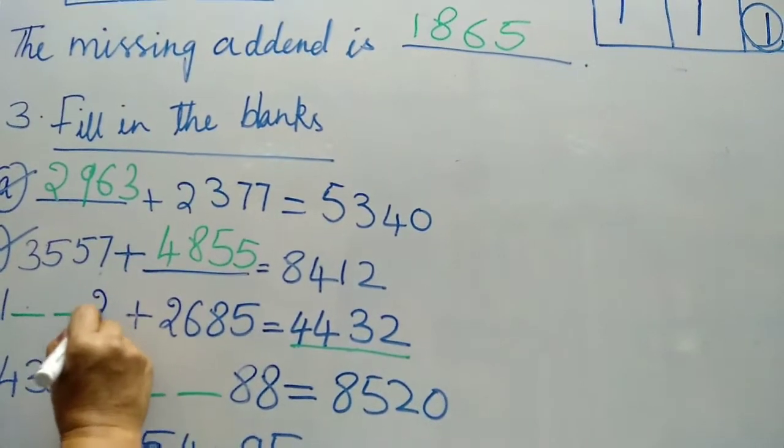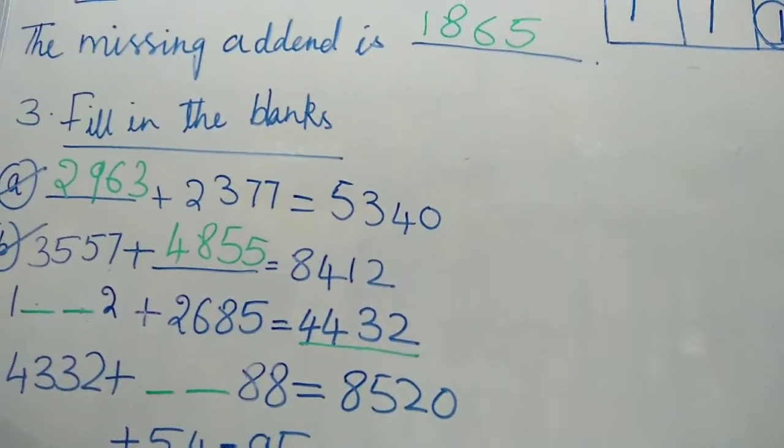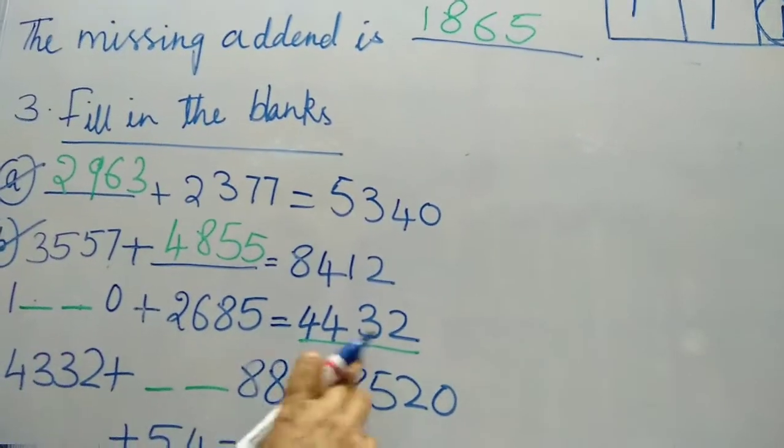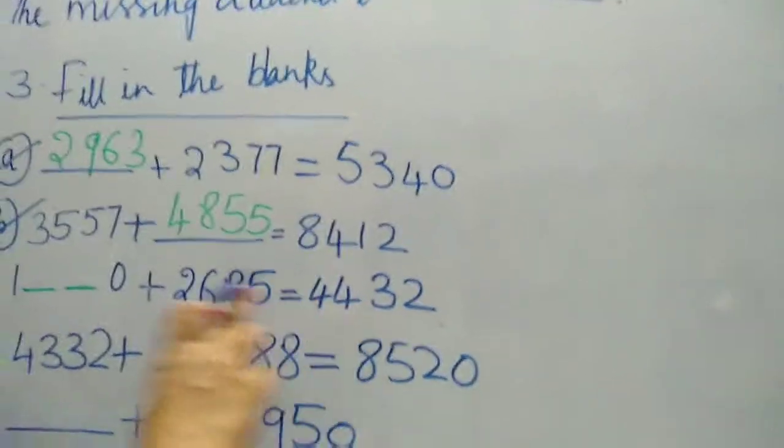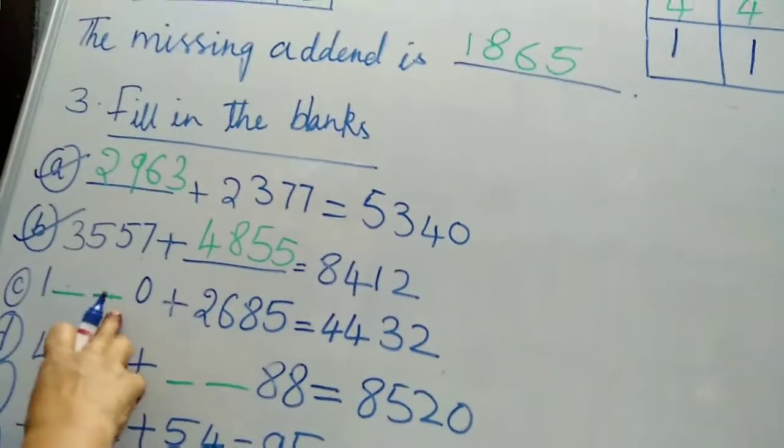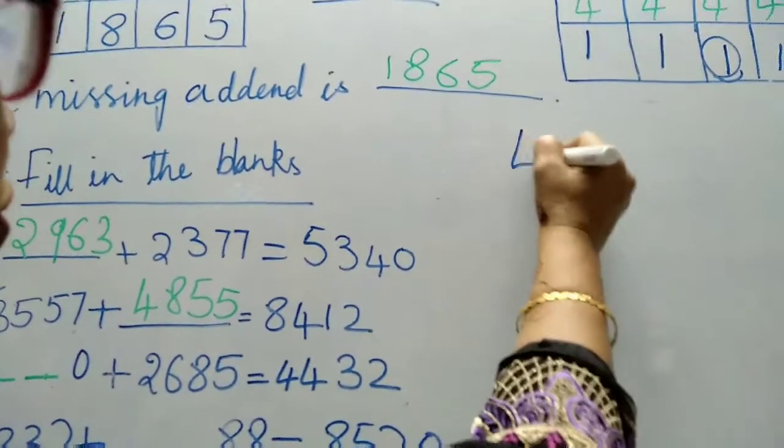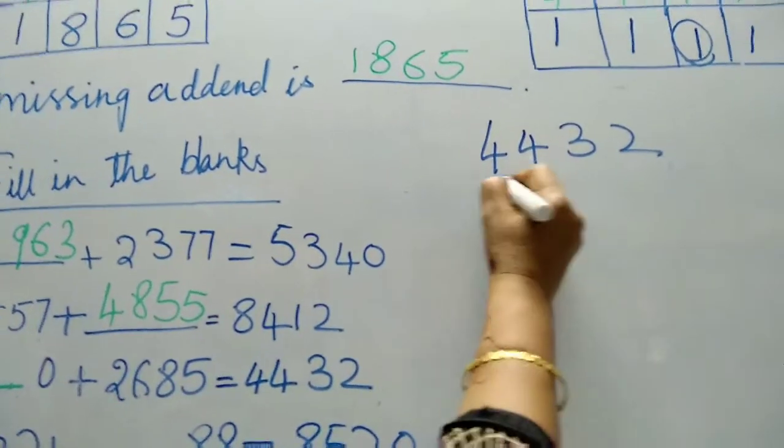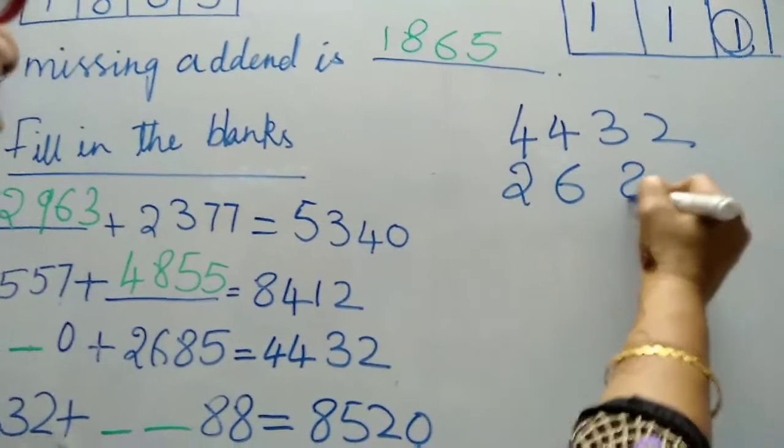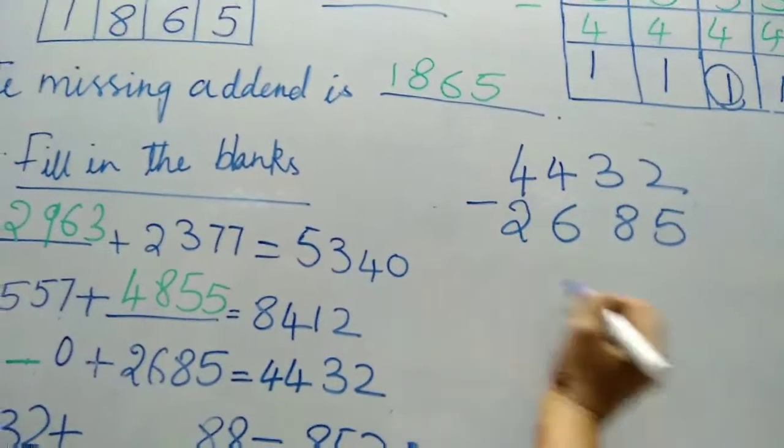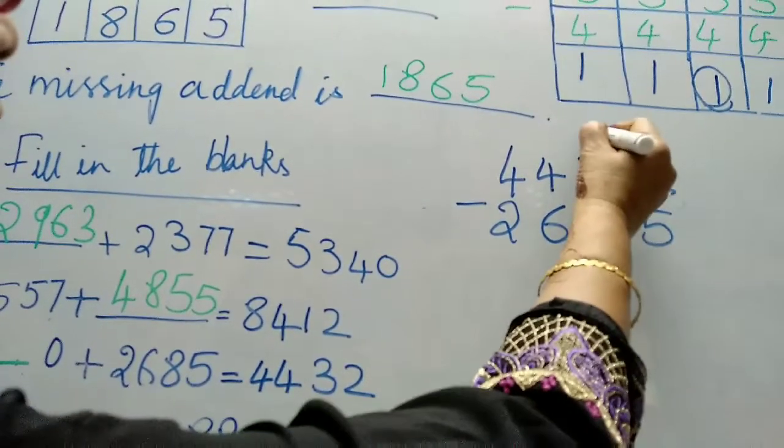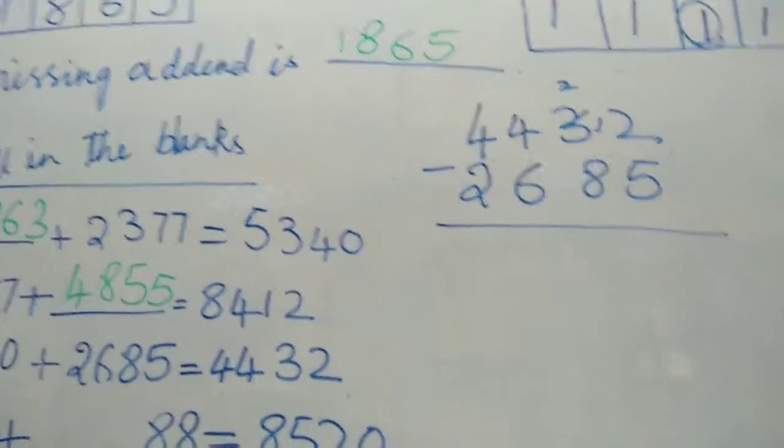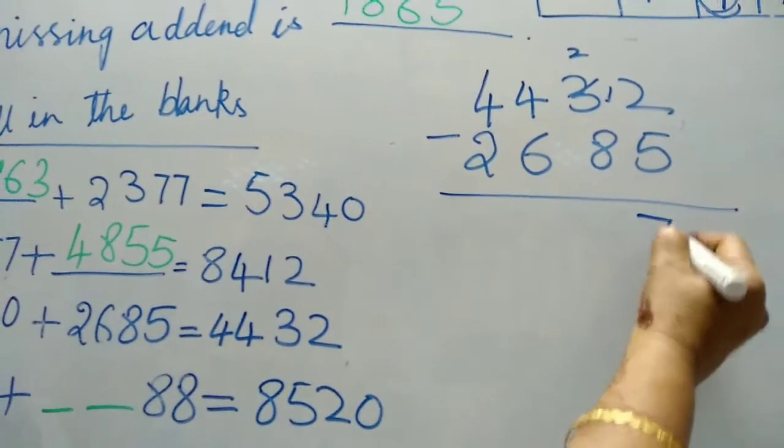Let's do C. So what we have to do? Here missing number is there, missing digit. So what we will do? 4, 4, 4, 3, 2 minus 2, 6, 8, 5. Borrow 1 here, 12. From 12, 5 goes, count to 12, that's 7.